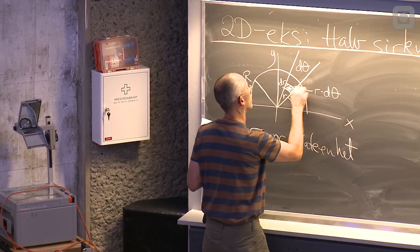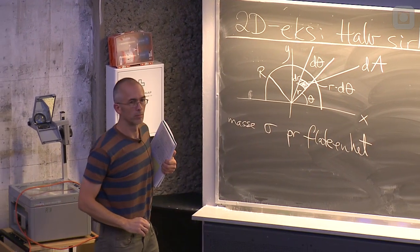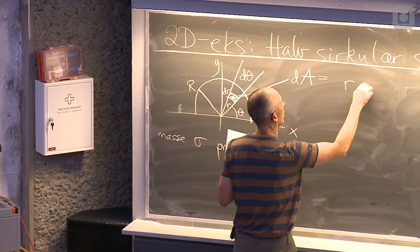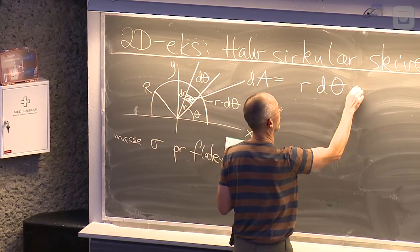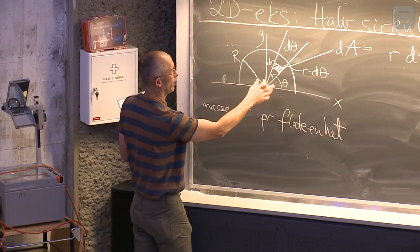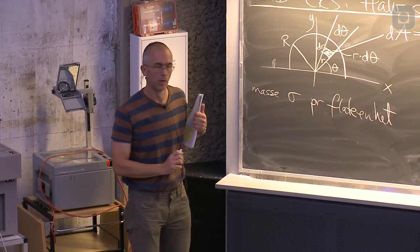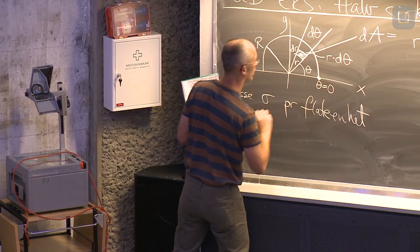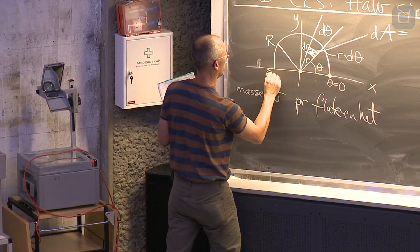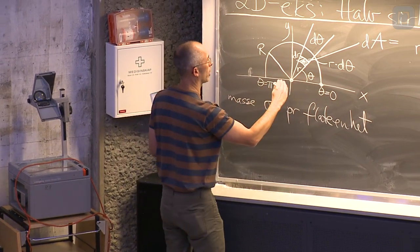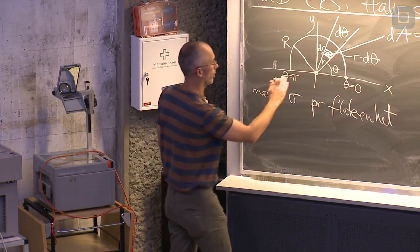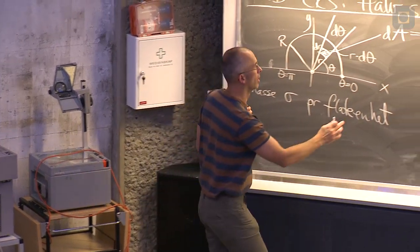Det betyr at arealet av den lille biten der, ja, det er noe bredde gange høyde. La oss si det er bredden, r gange d theta, og høyden er dr. Og med sånne små biter, så kan jeg dekke hele skiva. Hvis jeg starter her, der er theta lik null. Eller jeg kan egentlig starte der, der det også er lik null. Og så sveiper jeg over helt hit, der theta er lik pi. Samtidig som jeg går fra innerst her, og ut til radien på skiva.